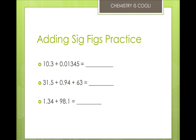Here's some significant figures practice. I'm going to give you the answer to the first one, and then the other two you can check with me over email or by office hours. If we take 10.3 plus 0.01345, we get 10.31345, and then we round it up to 10.3. Now I want you to do these next two: 31.5 plus 0.94 plus 63, and then 1.34 plus 98.1. If you're not sure of your answers, see me by email or during office hours.